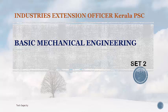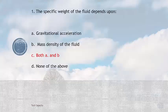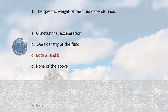First question: The specific weight of the fluid depends upon - gravitational acceleration, mass density of the fluid, both A and B, or none of the above. The answer is both A and B. Specific weight is the weight of the fluid divided by volume of the fluid, which is mass times gravitational acceleration divided by volume. M by V is density, so it depends on acceleration due to gravity and mass density.